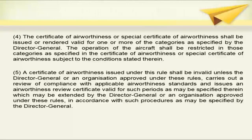The CoA issued will be invalid until the DGCA or any approved organization carries out a review of the aircraft, including physical inspection and inspection of continuing airworthiness records. Once everything is in order, the airworthiness review certificate is issued. The ARC may be valid for periods specified in the certificate, generally one year, and may be limited, restricted, or further extended by the Director General or an approved organization.